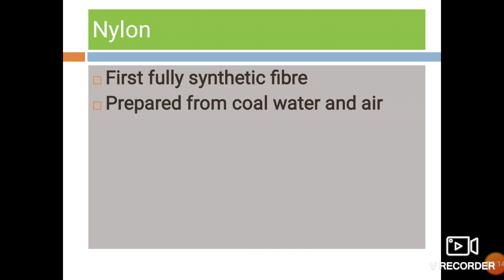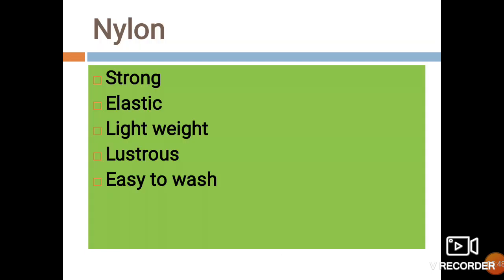The next synthetic fiber is nylon. Nylon is called the first fully synthetic fiber. Nylon is prepared from coal, water, and air — these are the raw materials used for the preparation of nylon.